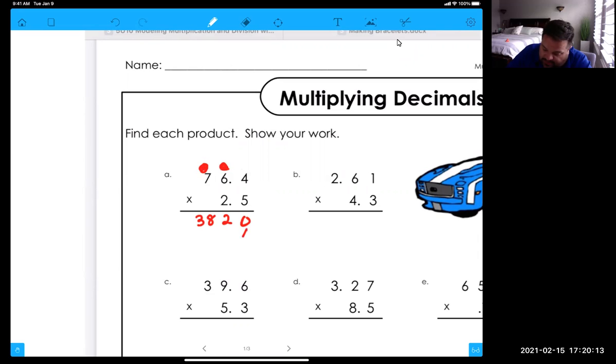Put in my little placeholder over here because now I'm starting with this two, so it's going to come down here. Two times four is eight. Two times six is 12, regroup the one. Two times seven is 14, 15 total.